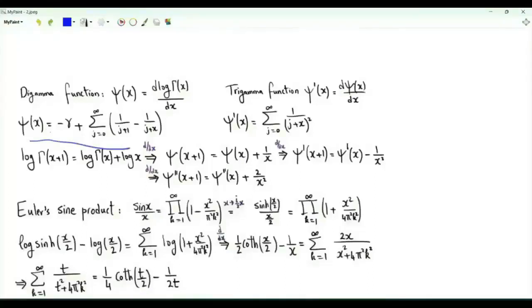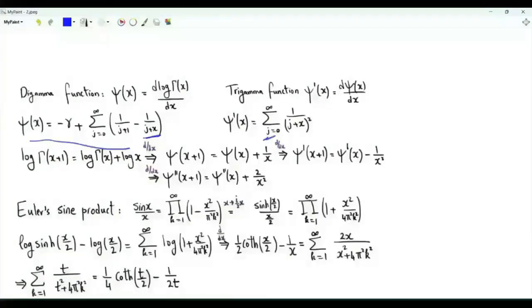This is the series representation of the digamma function. Digamma(x) equals minus the Euler-Mascheroni constant gamma, plus the summation over non-negative integers k of [1/(k+1) minus 1/(k+x)]. The first derivative is the summation over non-negative integers k of 1/(k+x)².